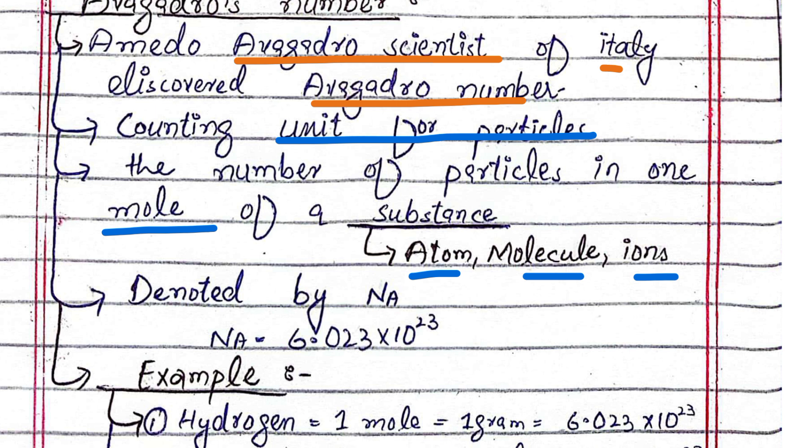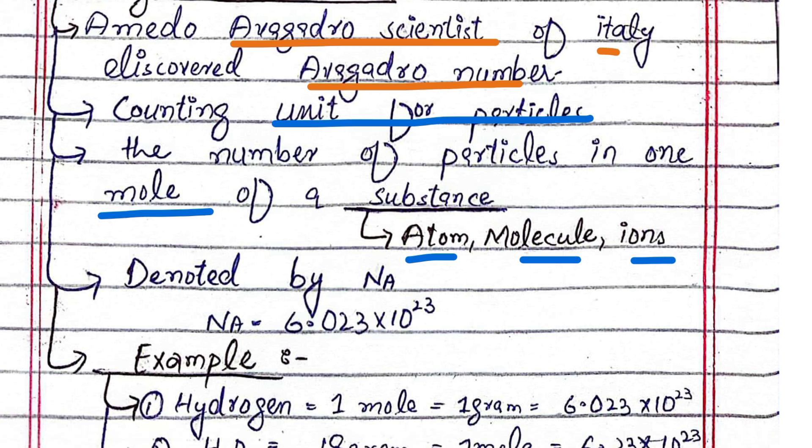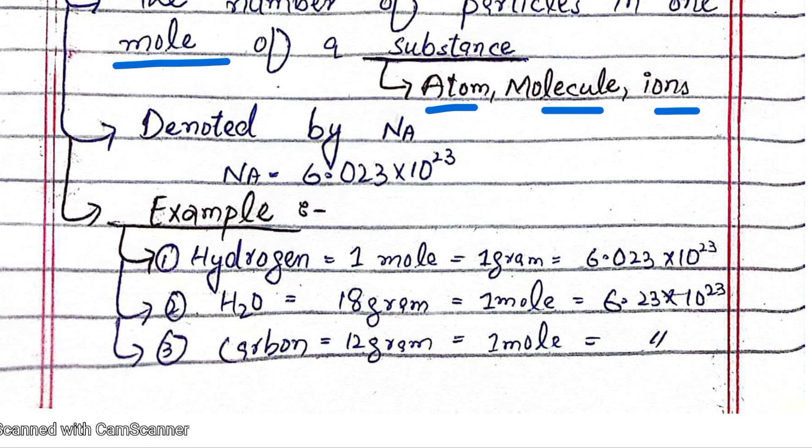Avogadro number is denoted by N_A. The value of Avogadro number is 6.023 × 10^23 particles present in one mole.